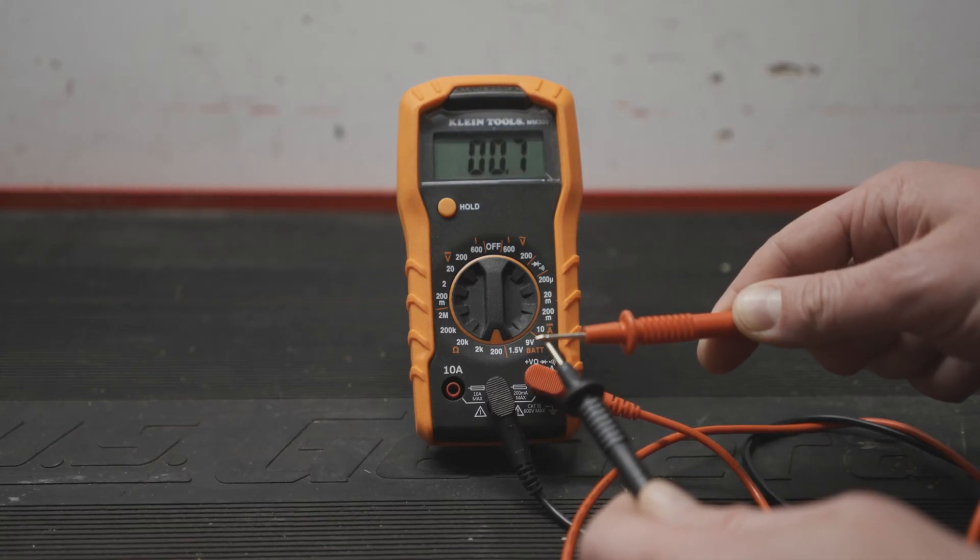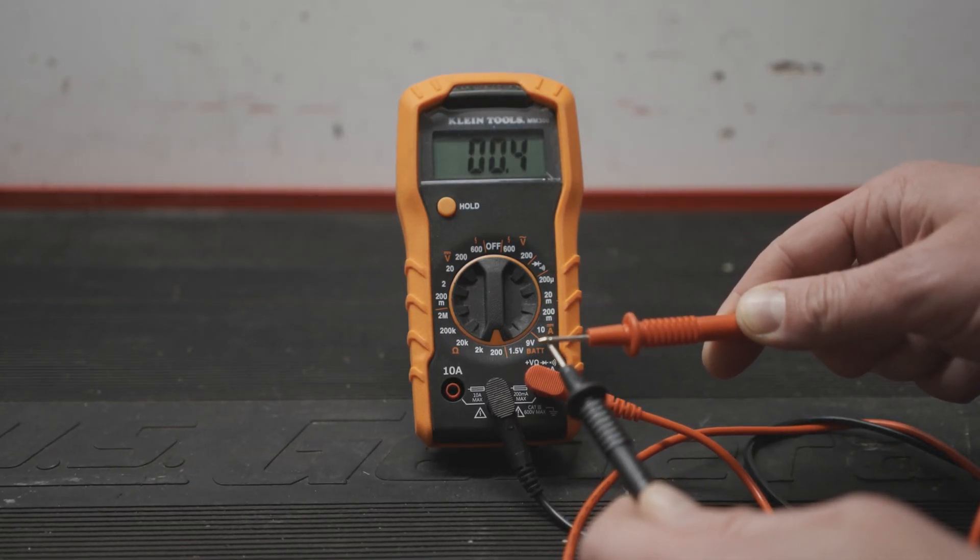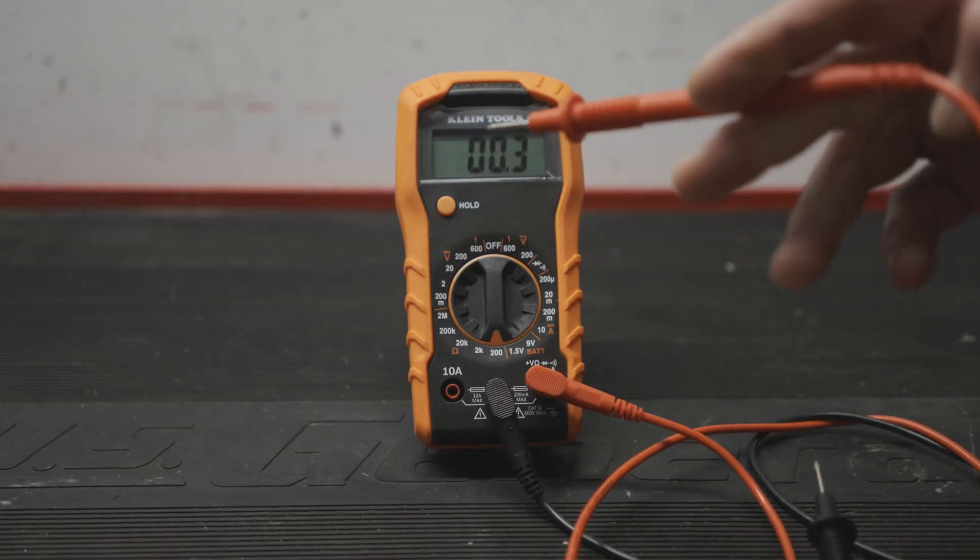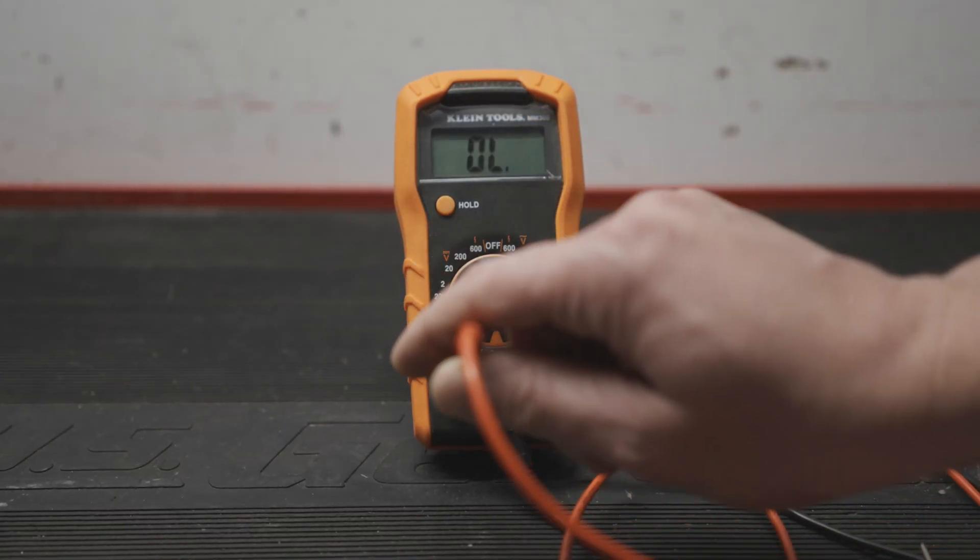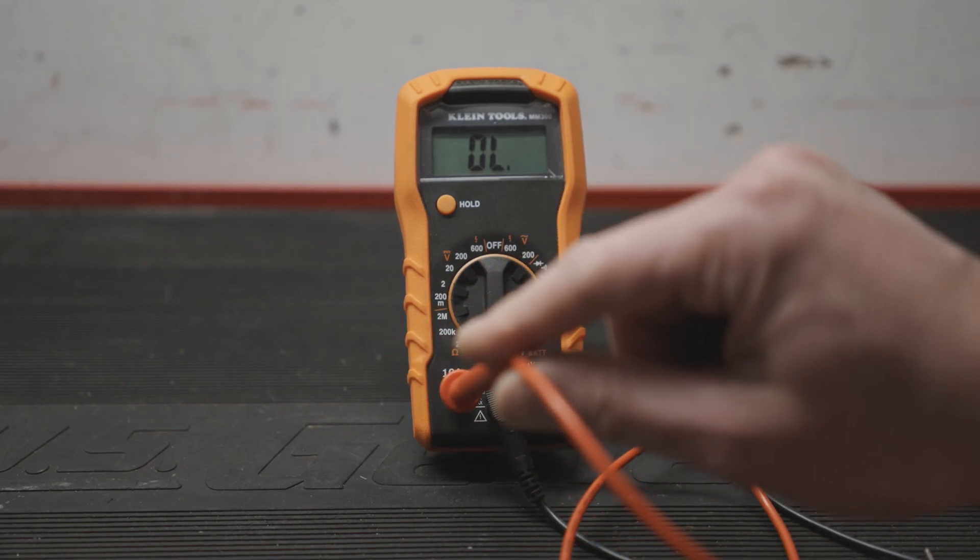You can double check that it's a fuse and not some other part of the multimeter by touching the two leads together. There is a small amount of resistance which is what we want. If the fuse wasn't blown you'd also have a small amount of resistance when the lead is in the amp port.